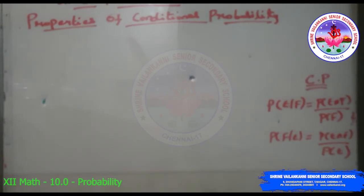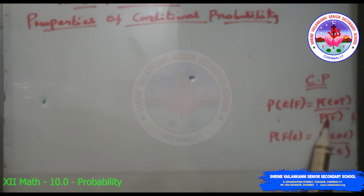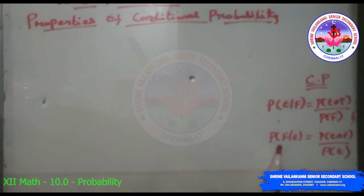Formal definition: Let E and F be two events associated with sample space S. The probability of occurrence of event E when event F has already occurred is called conditional probability, denoted P(E|F) = P(E∩F)/P(F) where P(F) ≠ 0. Similarly, P(F|E) = P(E∩F)/P(E) where P(E) ≠ 0.